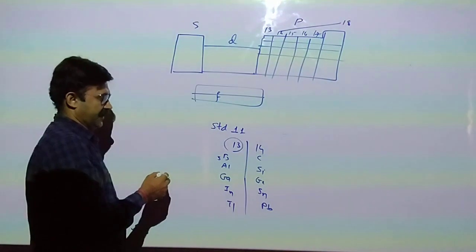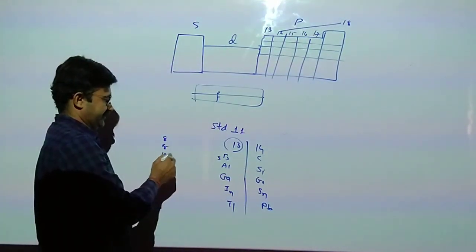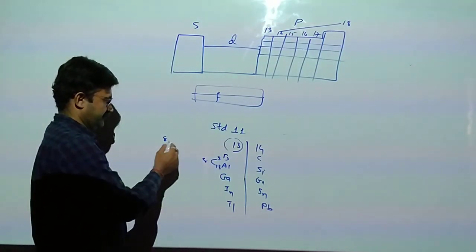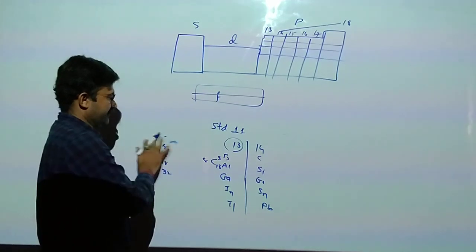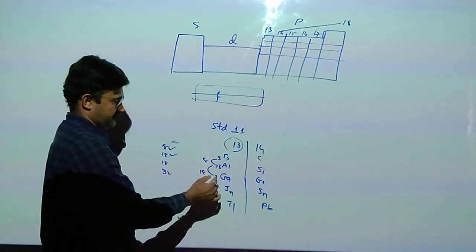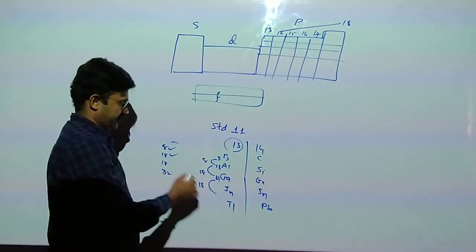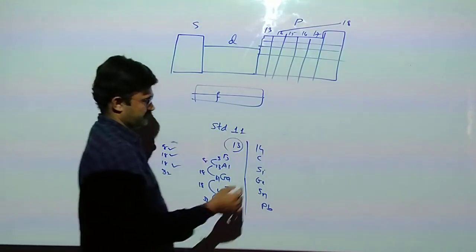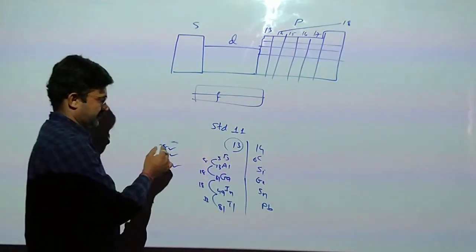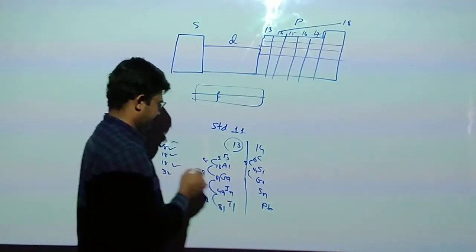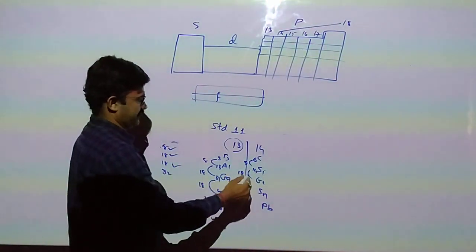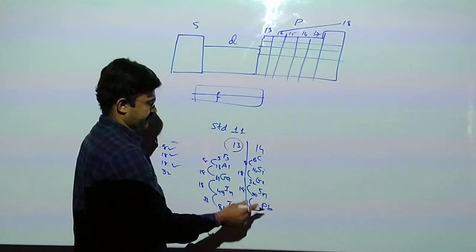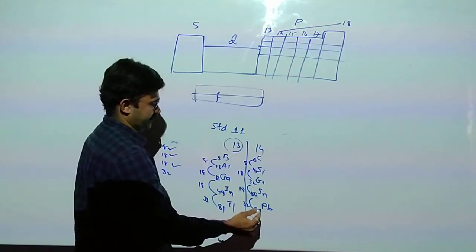Atomic number of Boron is 5. So 5 plus 8 is 13, 13 plus 18 is 31, 31 plus 18 is 49, 49 plus 32 is 81. Now here is Carbon, 6 plus 8 is 14, 14 plus 18 is 32, then 50, then Lead gives 82.